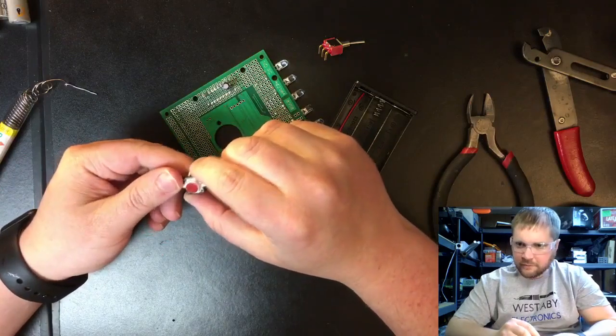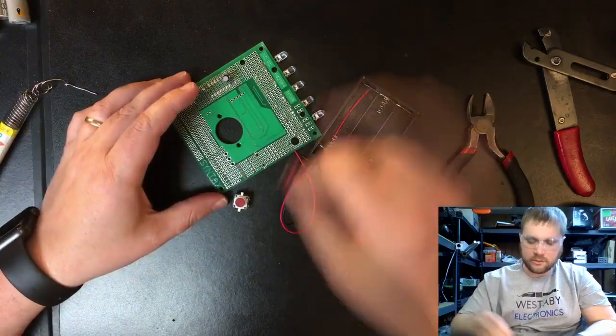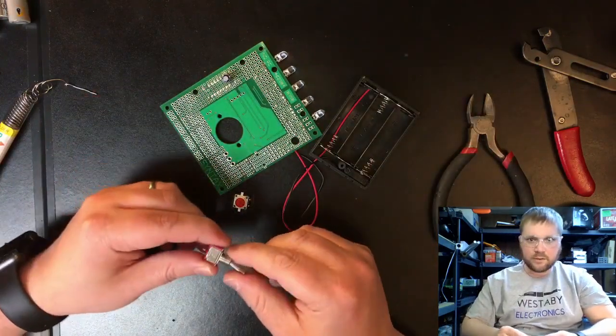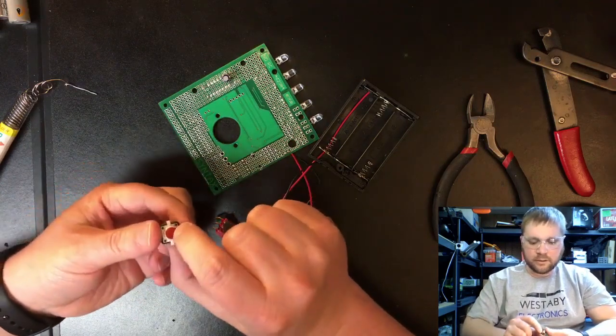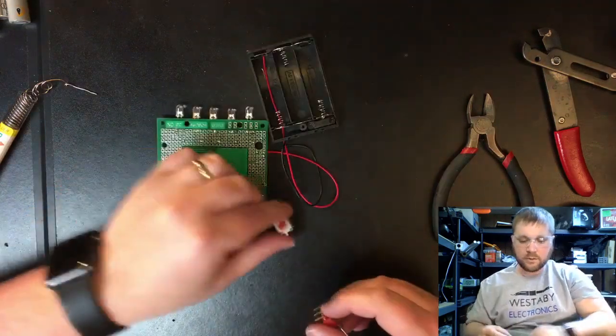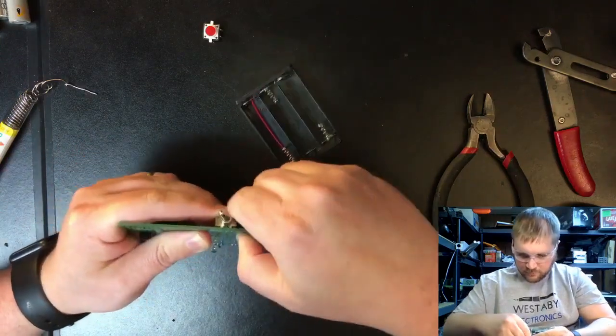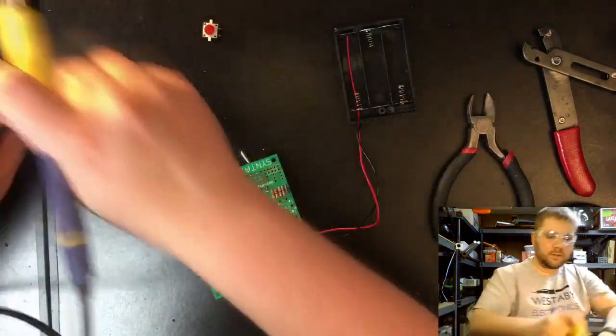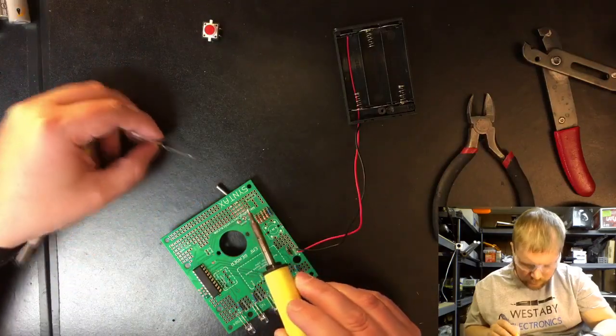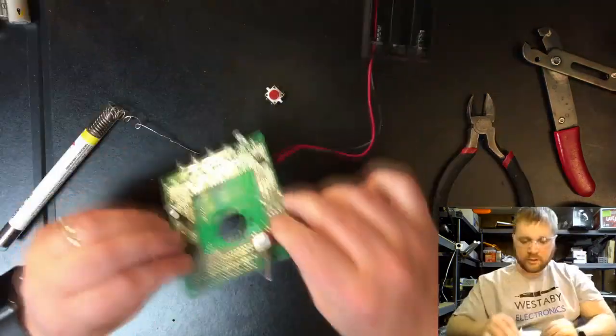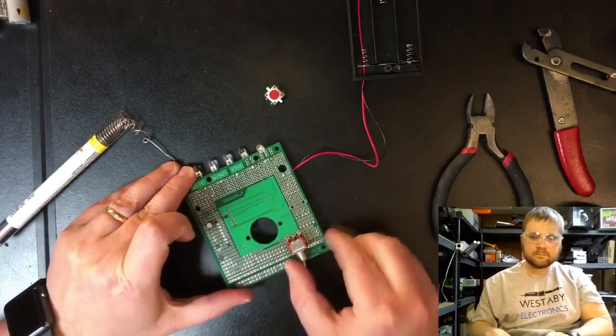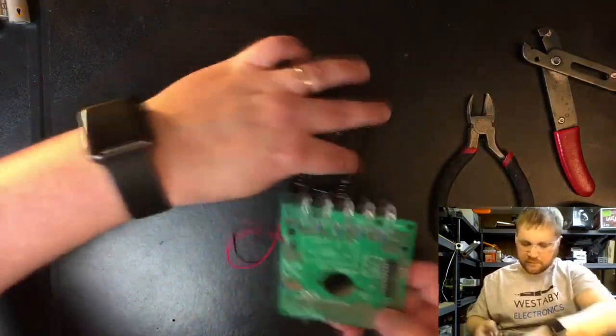The next part we have here is installing some switches. So we have the toggle switch and we have the light up button for the back. Let's start with the big one. The toggle, he just pushes in firmly. So let's solder him in place. And that's our toggle.